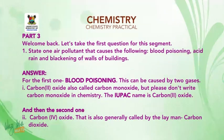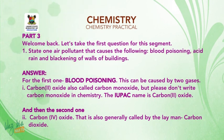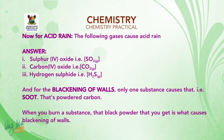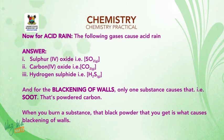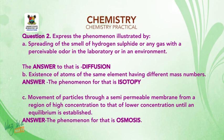Welcome back. Let's take the first question for this segment: state one air pollutant that causes the following — blood poisoning, acid rain, and blackening of buildings. For blood poisoning, this can be caused by two gases: carbon monoxide and carbon dioxide. For acid rain, the following gases are responsible: sulfur dioxide (SO₂), carbon dioxide (CO₂), and hydrogen sulfide (H₂S). For the blackening of walls, only one substance causes that — soot, which is powdered carbon produced when substances are burned.